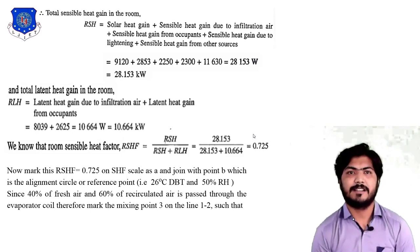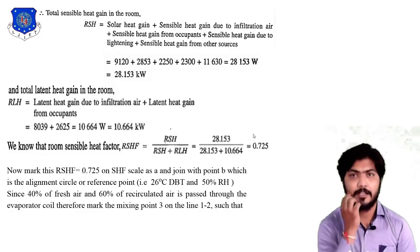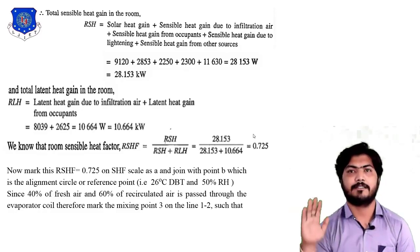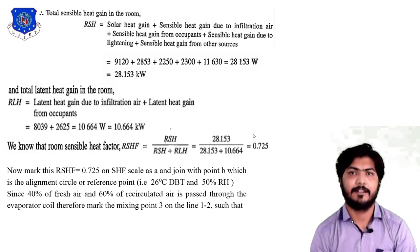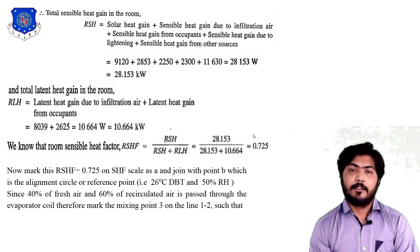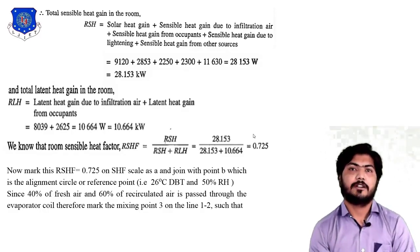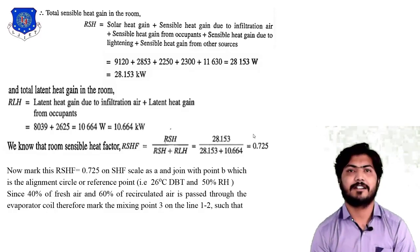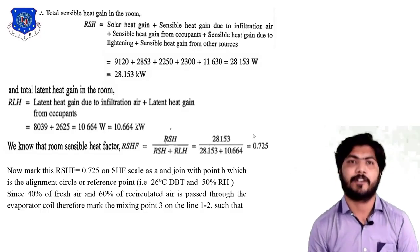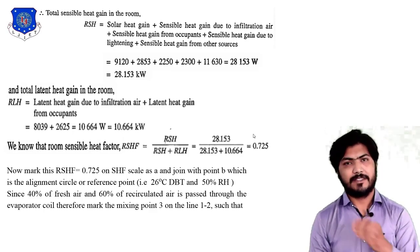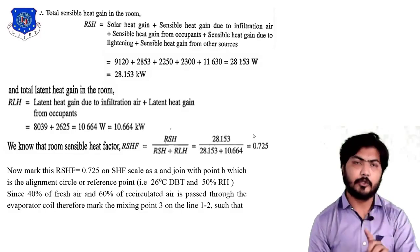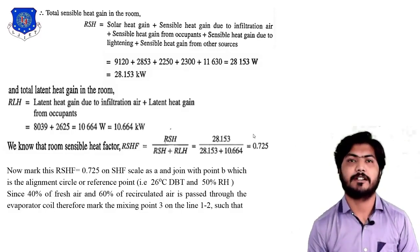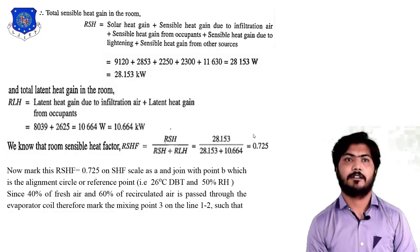This RSHF of 0.725 is marked on the psychrometric chart on the sensible heat factor scale, which is a vertical line on the left-hand side coordinates of the chart. From the marked point 0.725, a line is drawn to the reference point, which is the alignment circle at 26 degree DBT and 50% relative humidity — that is the reference point for thermal comfort. Joining these two points gives the room sensible heat factor line. From this line, a parallel line is drawn from point 2 up to the saturation curve.